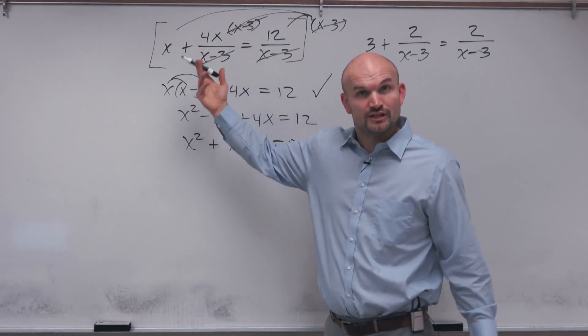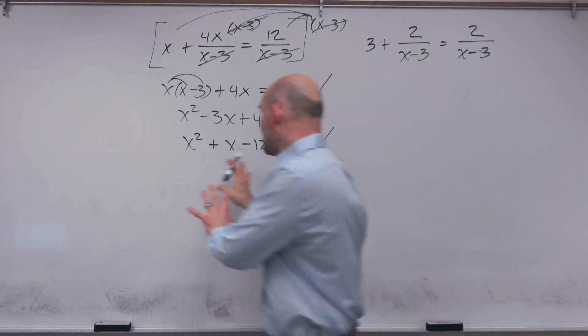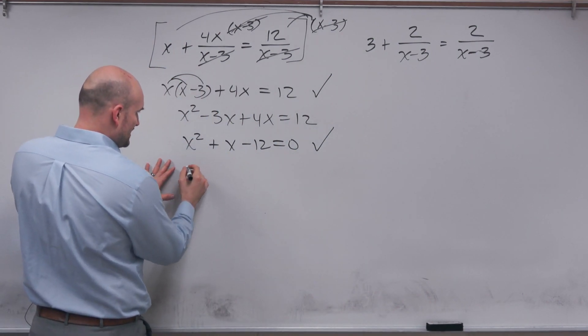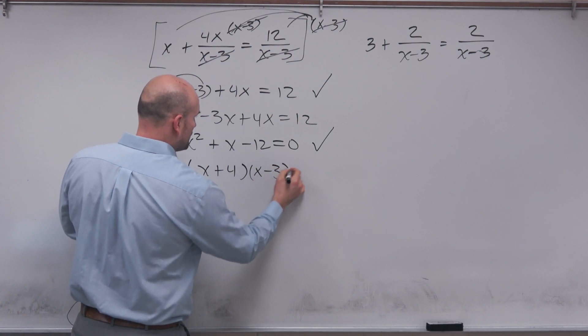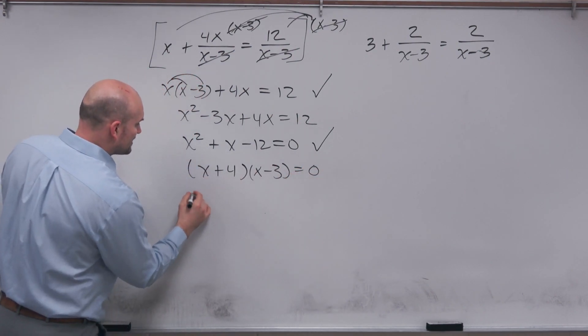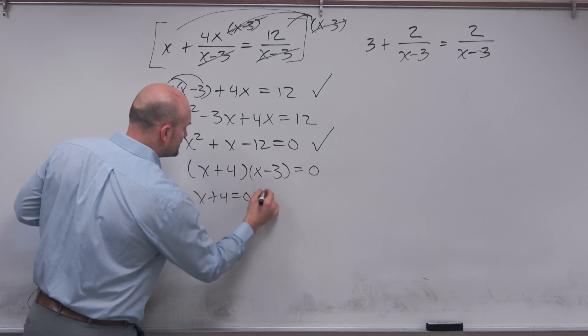So when I go and solve this first we want to look to factoring and I can see that x plus 4 times x minus 3 is going to work. And therefore now I can apply the zero product property to go ahead and solve here.